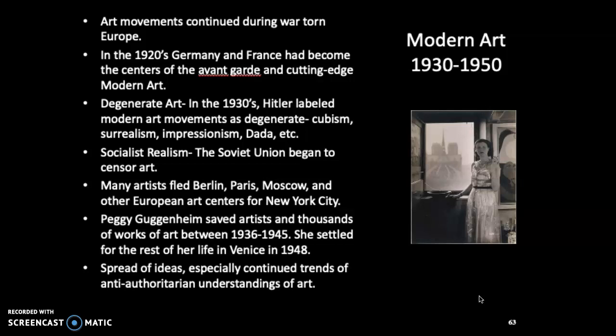She used her money and her connections to try and get as much art and people out of Europe as possible, at great danger to herself. There are several times where the Nazis were actually banging on her hotel room door and she was going out the back to get art onto ships. She did this from 1936 to 1945, and then settled the rest of her life in Venice in 1948. There's a museum — the Peggy Guggenheim museum in Venice — that holds a lot of her work.